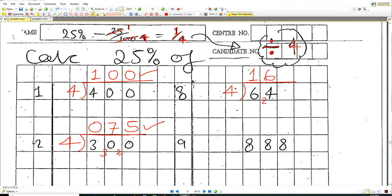And here's our last question. You've been asked to work out 25% of 888. So again, 25% is a quarter, so we have to divide it by four. So fours in eight is two, fours in eight is two, and fours in eight is two. So 25% of 888 is 222.